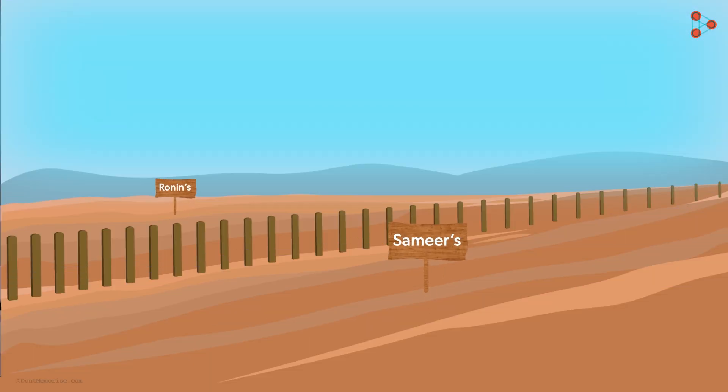We have two men who are farmers. The first one named Samir has two hectares of land while the other whose name is Ronin has four hectares of land.